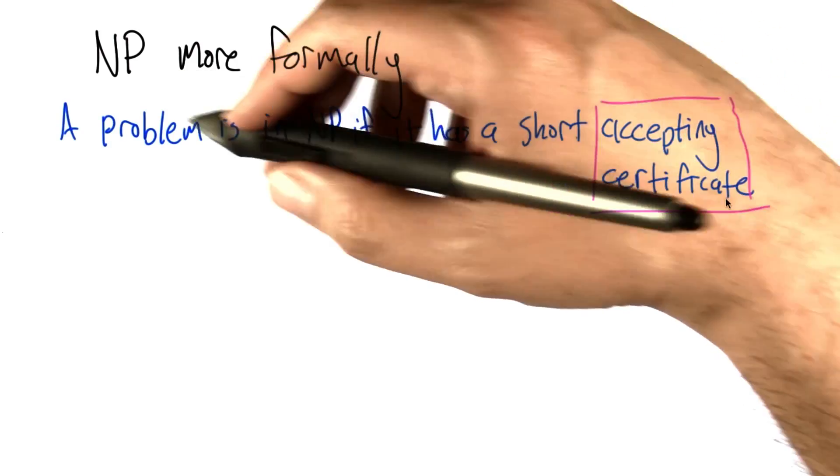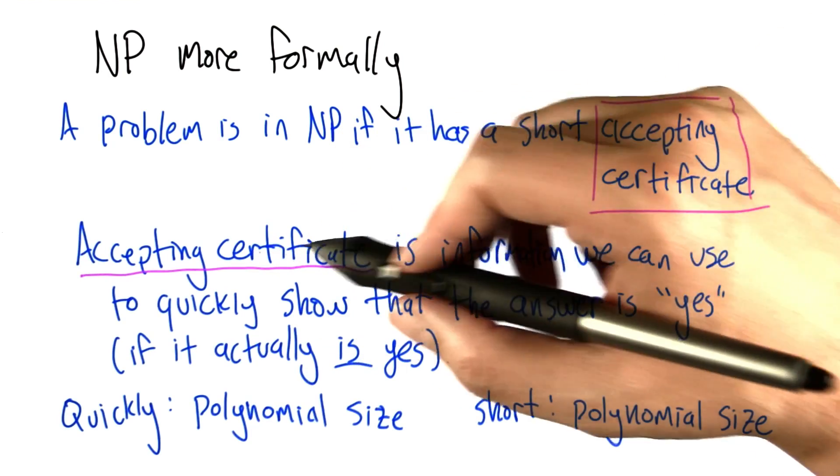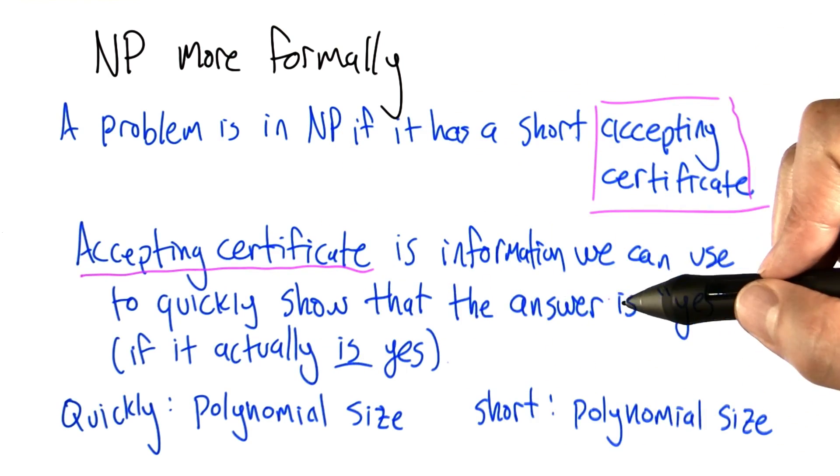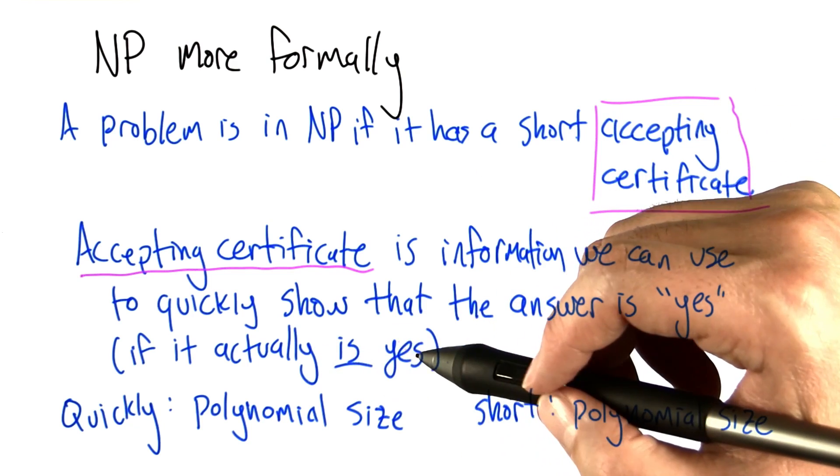So one definition of NP says that a problem is in NP if it has a short accepting certificate. An accepting certificate is information that we can use to quickly show that the answer to the decision problem is yes, if it actually is yes.